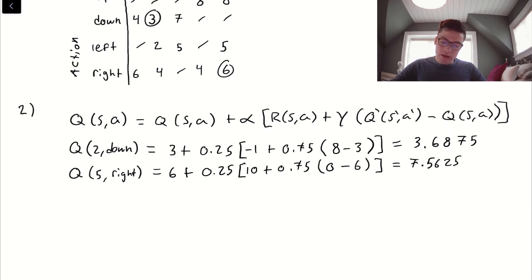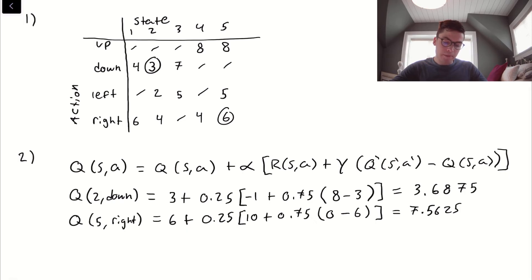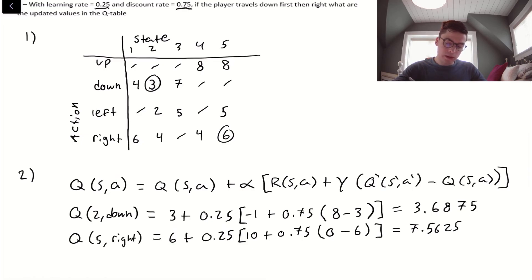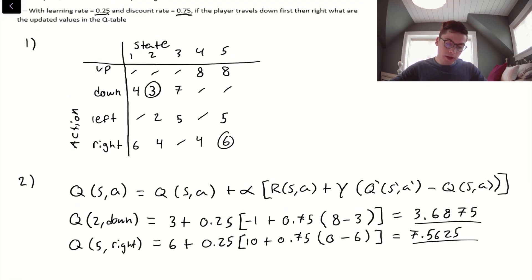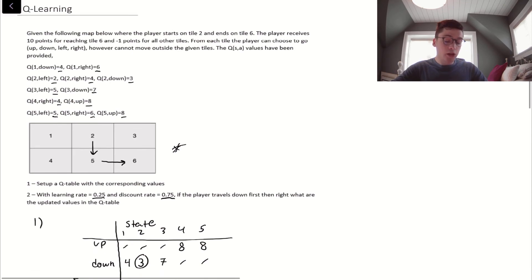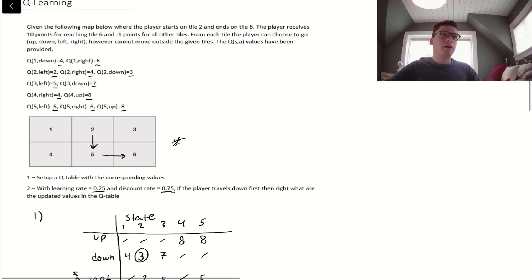We have solved this question for 2 down and 5 right. The last thing we've got to do is update the values in the Q table. We would see 2 down, that's currently 3. We would update that value to 3.6875. As well, for 5 right, this value 6 would get updated to 7.5625 that we solved for. This is a Q learning problem that I addressed. I hope you guys enjoyed it. I hope it was helpful, and I'll catch you in the next one. Thanks.